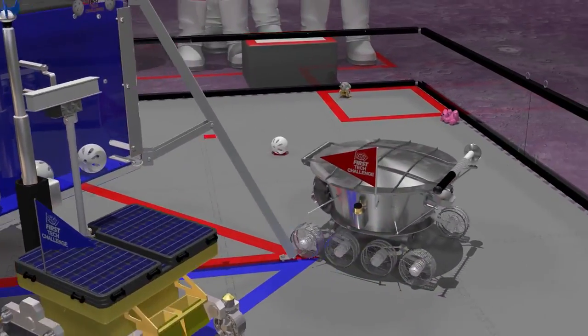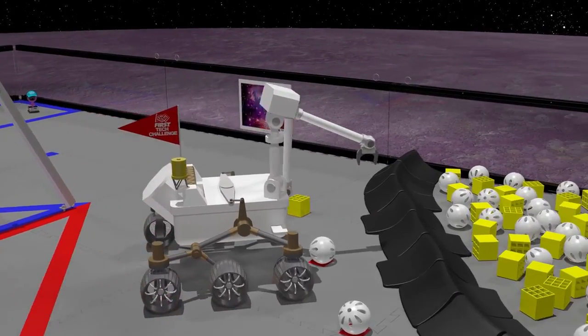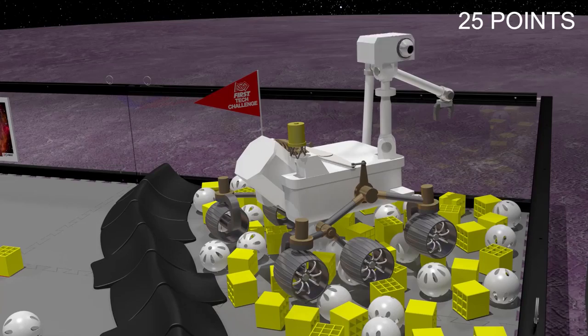Robots that park partially in a crater will earn 15 points. However, if they go completely into the crater, they earn 25 points for their alliance.